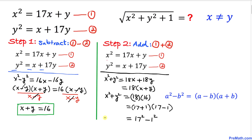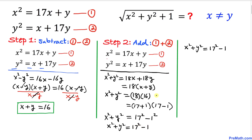Therefore x² + y² = 17² − 1. Moving the −1 to the left-hand side gives x² + y² + 1 = 17².